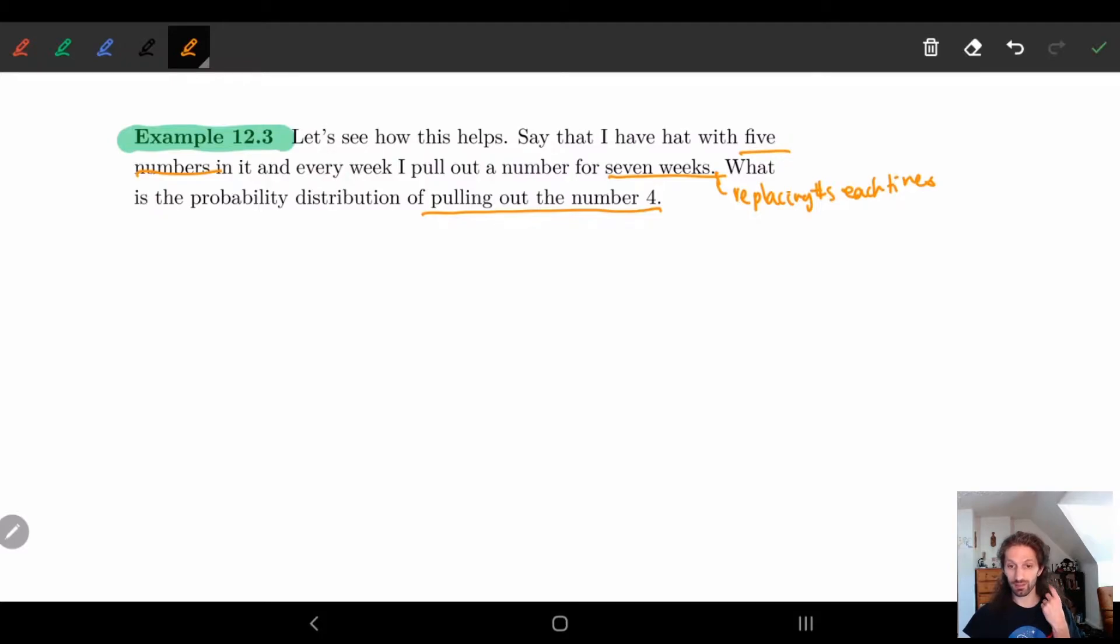And so let's calculate this. So we know that p is equal to one-fifth, right? Because I have five numbers in the hat. We know that n is equal to seven because I'm doing this for seven weeks. So let's start off with just an arbitrary number and start off with p0.